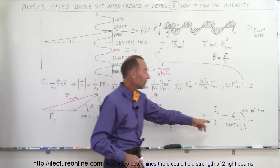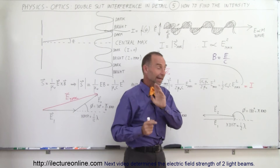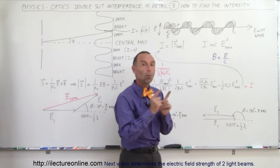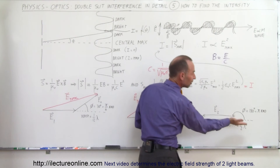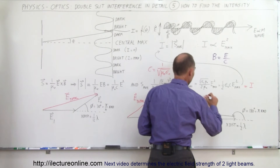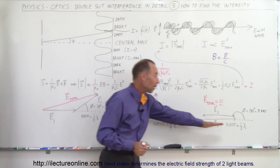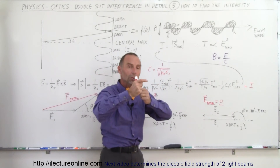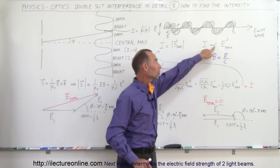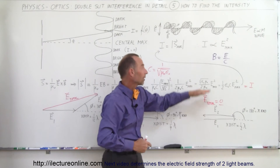Our third example is where the extra distance traveled is half a wavelength. We already know that when the extra path length difference is half a wavelength, the two waves are completely out of phase and produce destructive interference. We can see this graphically: the electric field oscillations of one wave are in one direction, while the other wave's electric field oscillations are exactly 180 degrees in the opposite direction. When you add these two vectors together, E_total equals zero — they cancel each other out, producing zero intensity at that point.